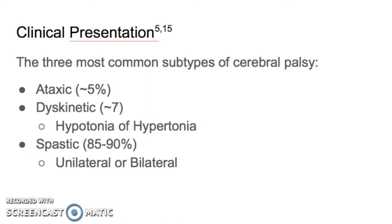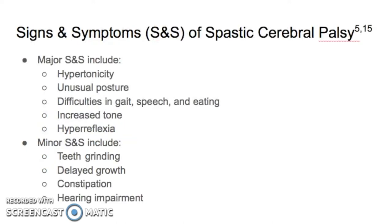The most common type of cerebral palsy is spastic, which accounts for 85% to 90% of individuals with cerebral palsy. Within the spastic subtype, they can present with unilateral or bilateral symptoms. These signs and symptoms are due to damage in the motor cortex during or after birth. The major signs and symptoms of these individuals are unusual posture, difficulties in gait, speech, and eating, which may be due to hypertonicity, increased tone, and hyperreflexia.